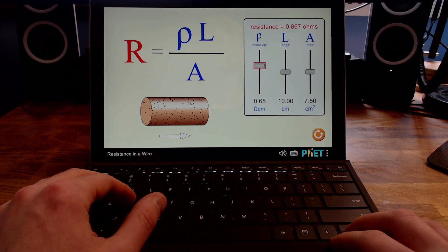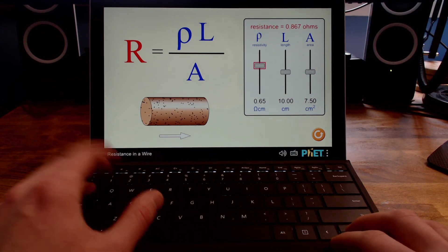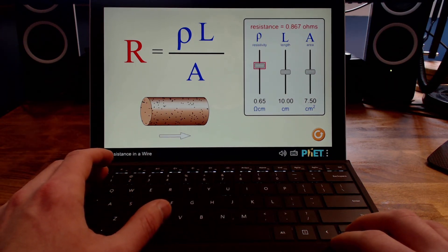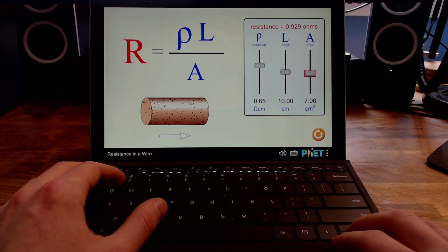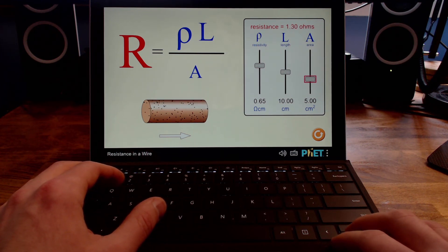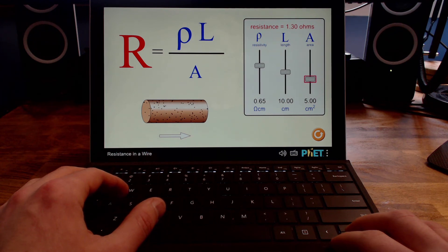Let's change the Sim once more by focusing the area slider and decreasing the area. Resistivity slider, L Length slider 10 cent, A Area slider 7.5 centimeters squared. 7 centimeters squared. As letter A shrinks, letter R grows. 5 centimeters squared. As letter A shrinks, letter R grows. Resistance now 1.30 ohms.